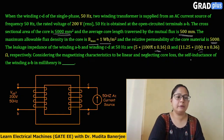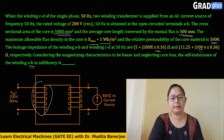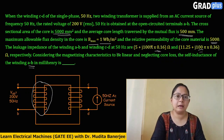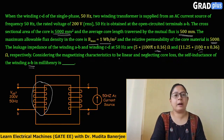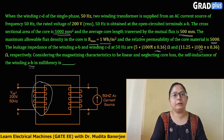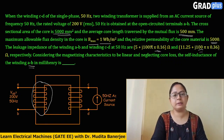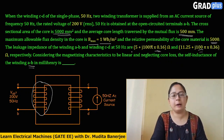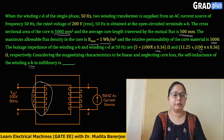Considering the magnetizing characteristics to be linear and neglecting core losses, we have to find the self inductance of winding AB in millihenry. First, gather all the data given, write all the formulas involved, and check what values are given and what are not. This problem seems lengthy but the solution is actually quite simple.